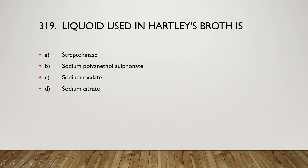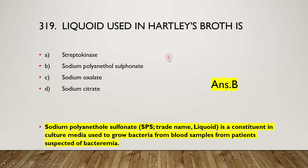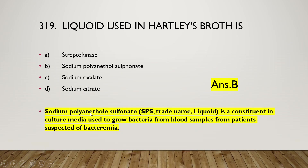The anticoagulant used in blood culture broth is streptokinase, sodium polyanethol sulfonate, sodium oxalate, or sodium citrate. The right answer is option B — sodium polyanethol sulfonate (SPS). SPS is a constituent in culture media used to grow bacteria from blood samples of patients suspected of bacteremia.